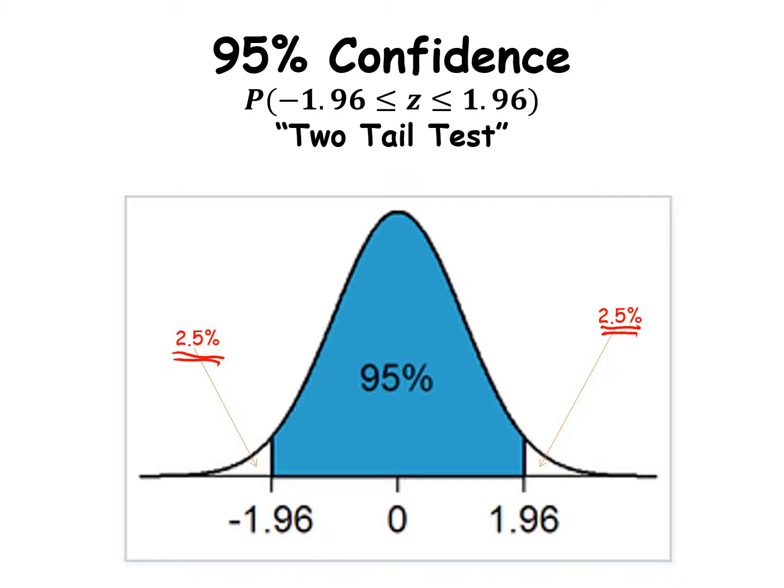A lot of things we're going to do will relate back to this specific image — the idea of 95% in the middle and 2.5% at either end, which accounts for the 5% incorrect, the 5% significance.